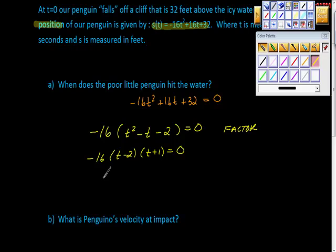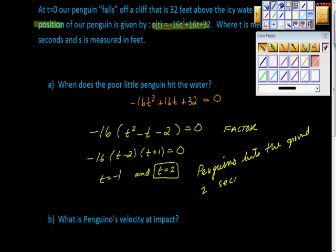The pinguino is at a height of zero at T equals negative 1 and T equals 2. And I guess my question is, which one of these is possible? This is time. Time can't be negative. So the pinguino hits the ground two seconds after the fall.